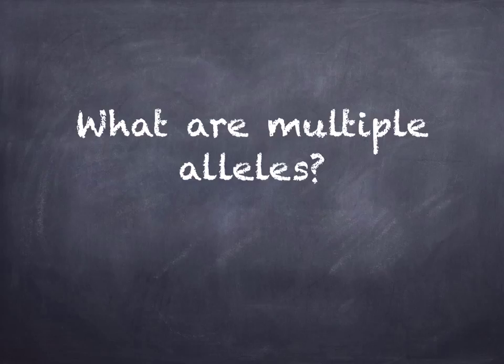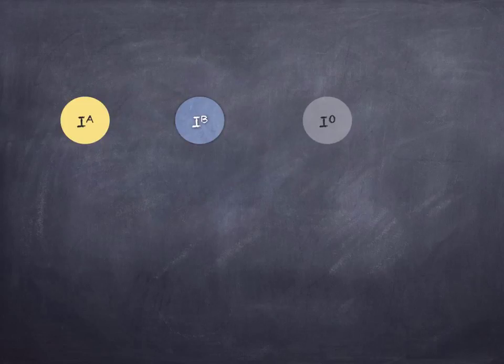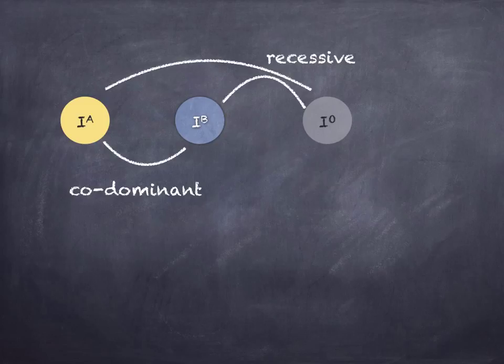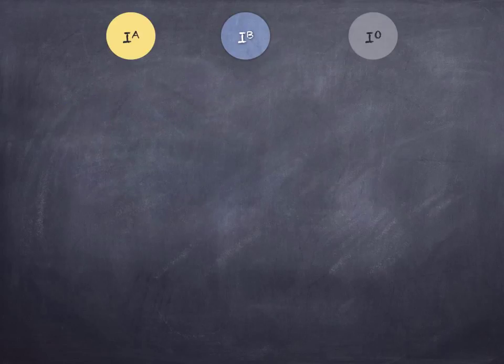What are multiple alleles? Sometimes a characteristic of an organism has more than two possible alleles — the organism is said to have multiple alleles for the character. However, there are always only two chromosomes in a homologous pair, meaning only two of the alleles can be present in a single organism. For example, the four blood groups A, B, AB, and O are all determined by a single gene with three different alleles: IA, IB, and IO. A and B are codominant, whilst O is recessive to both B and A.